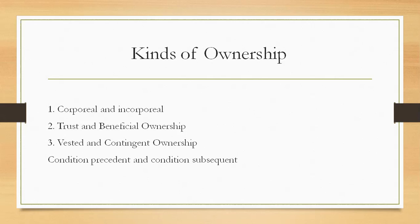Condition subsequent is also called condition of defeasance. It is the one which destroys or diverts the right upon happening of an event. Thus, a gift of a house may be made to A with the condition that if he divorces his wife, the house will revert to the donor. In such a case, the gift of the house takes effect immediately, and if subsequently A divorces his wife, the house will revert to the owner.